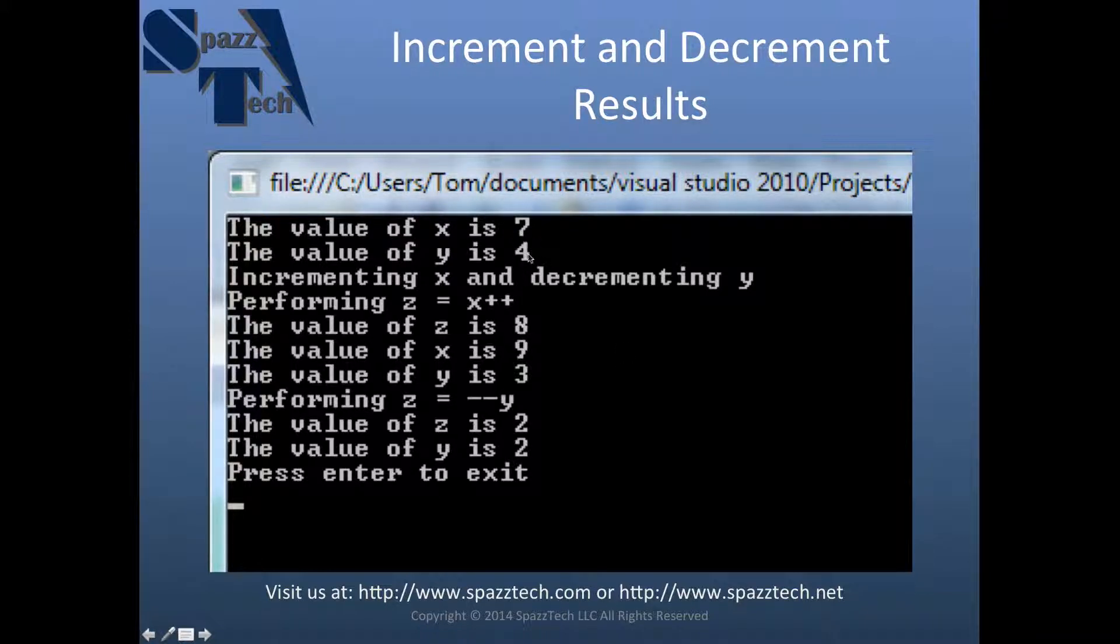So first, 7 and 4, like I said, and then 8 and 9. And then y is 3. And then we decrement the y. And then both z and y are 2. And that's it.